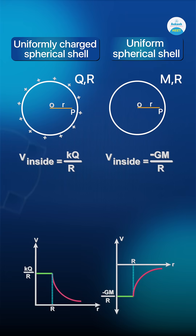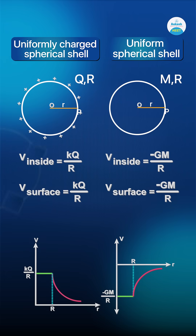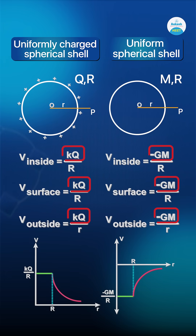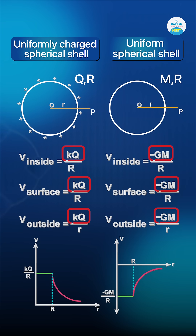Now coming back to the uniformly charged thin spherical shell: potential at an inside point would be KQ by R, potential at a point on the surface would again be KQ by R, while potential at an outside point would be KQ by r. On the gravitational front, once again, the expressions are very similar.